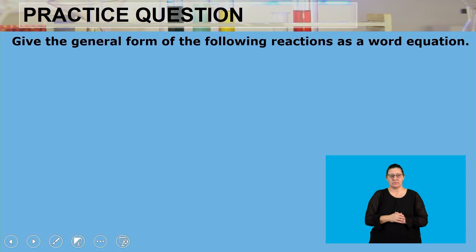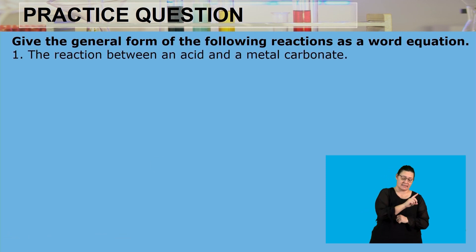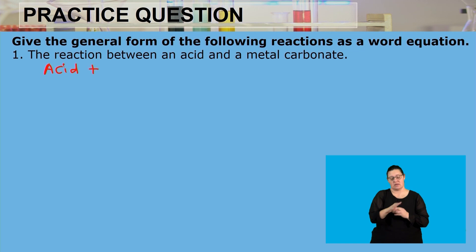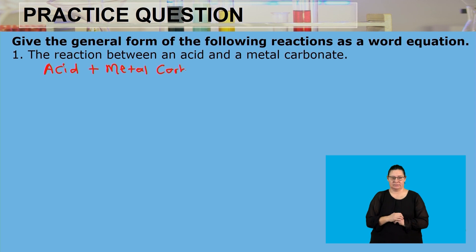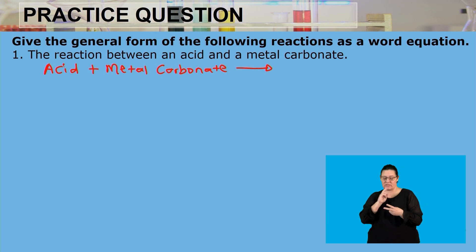The first question asks us to give the general form of the following reactions as word equations. We need to know what happens when the reaction between an acid and a metal carbonate occurs. If an acid reacts with a metal carbonate, there are three products that are going to be formed: salt, water, and carbon dioxide.